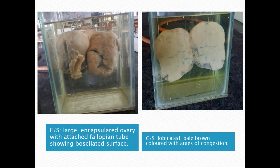Comparing dysgerminoma to benign cystic teratoma: dysgerminoma is a solid tumor, whereas teratoma is a cystic tumor. Grossly in teratoma, we can see hair, bone, skin, and various other tissues. In dysgerminoma, there are no cystic structures — the tumor entirely fills the ovary as a solid mass. Microscopically, dysgerminoma shows tumor cells in a nesting pattern, while in teratoma we can see hair, cartilage, and various structures derived from all three germinal layers.